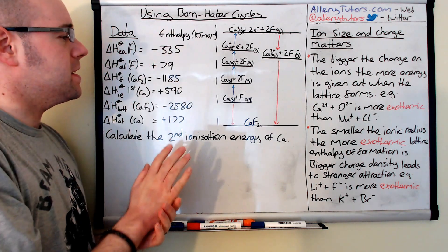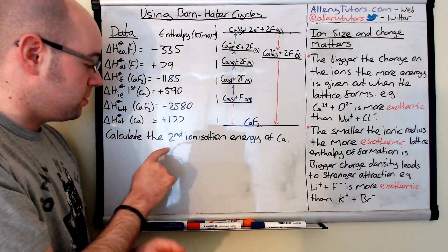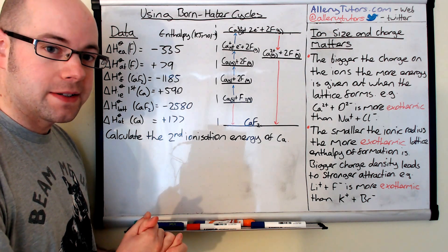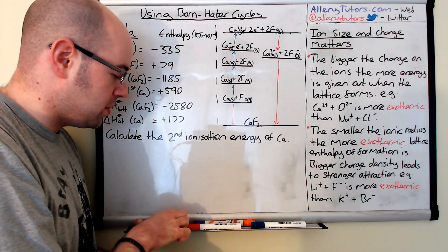So here's the data here. We're going to add the data. The first thing we need to do is identify where the second ionization of calcium is. So we're going to put this in green.